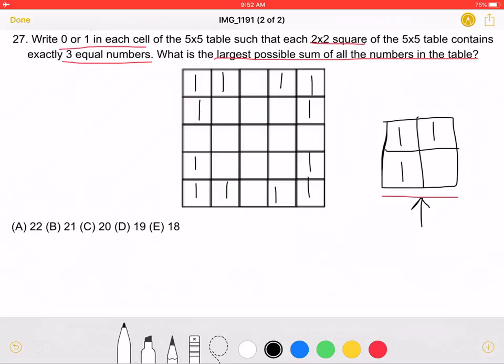Now, we still have some 2x2 squares without 3 equal numbers. In order to have all of them have 3 equal numbers, 3 1s, we have to put 1s along the center column and along the center row, maintaining symmetry as we do so.